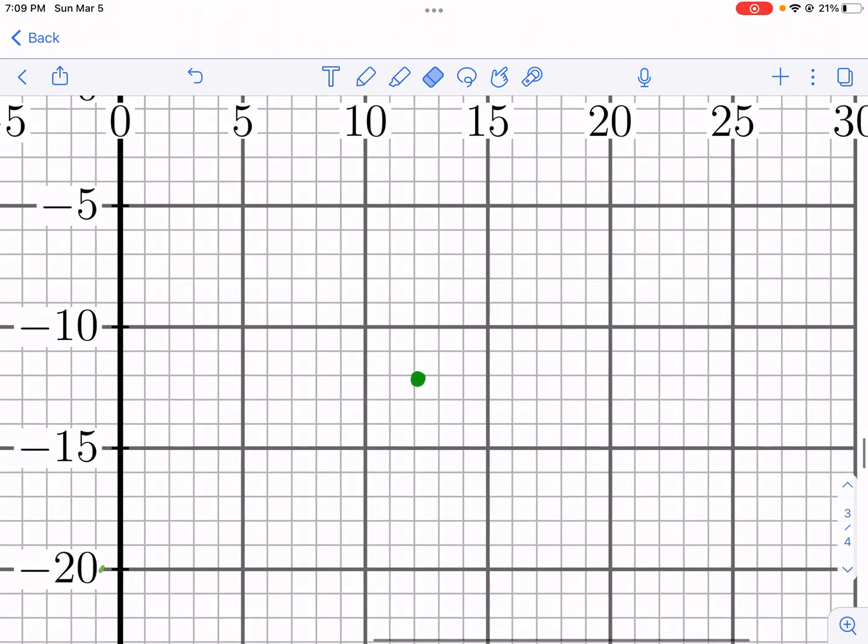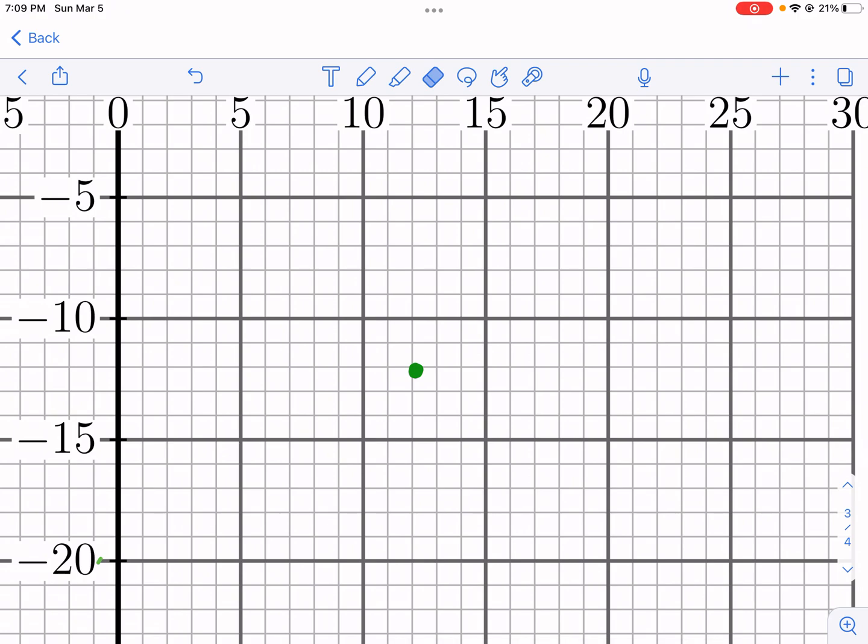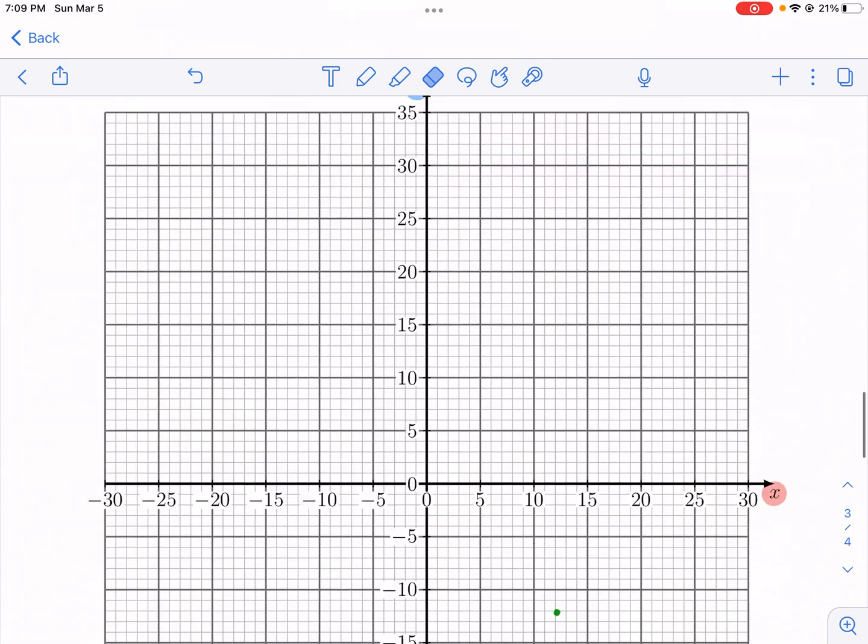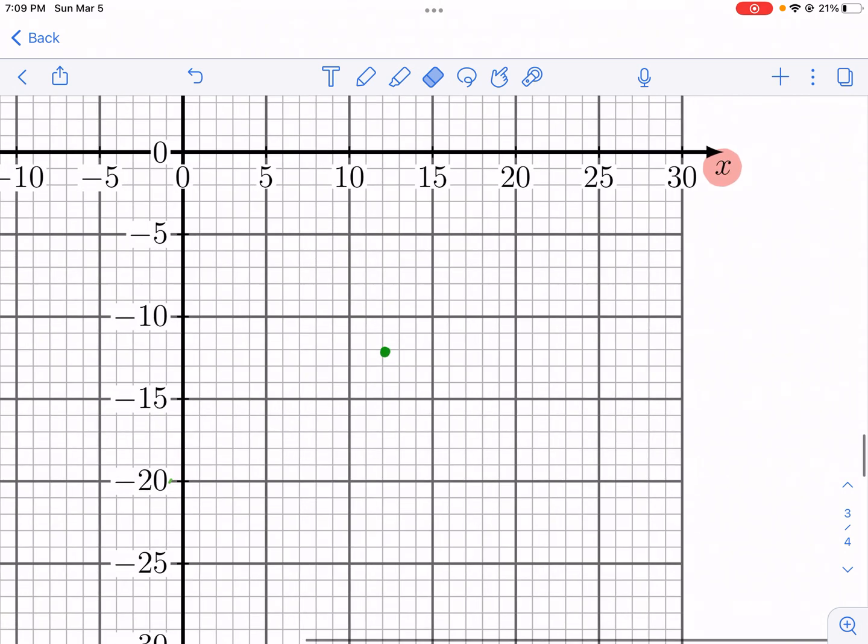What I'm gonna do now is I'm gonna find the next point, and the next point is 16, negative 5. Basically the same thing, just a little bit further down, and then I'm gonna connect my line, and I'm gonna keep doing that until I complete this whole thing.